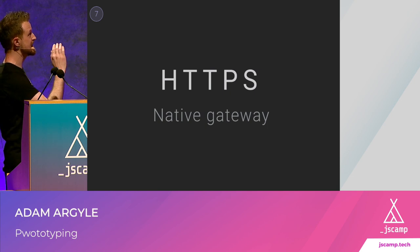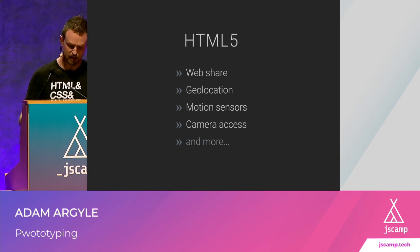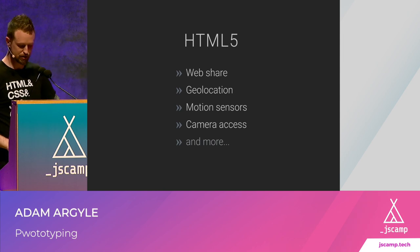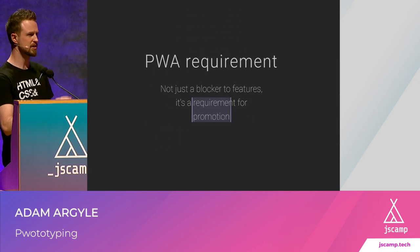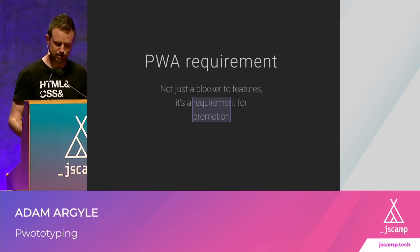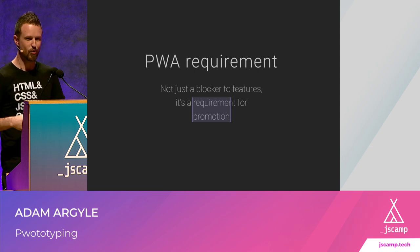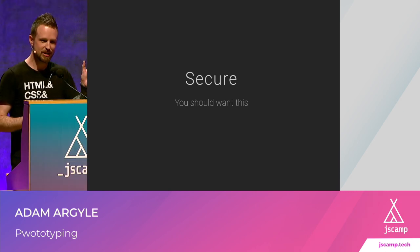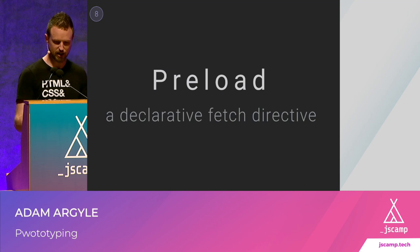HTTPS is a native gateway — you have to have HTTPS to get access to the things that will make you look native. If you want web share, geolocation, motion sensors, or camera access, you need HTTPS. If you put it on Firebase or Netlify, you get HTTPS for free. HTTPS is a PWA requirement — not just a blocker to features, it's a requirement for promotion. You get promoted in a PWA scenario, you get security, you get access to HTML5 APIs. There are a lot of easy ways to get that done these days.